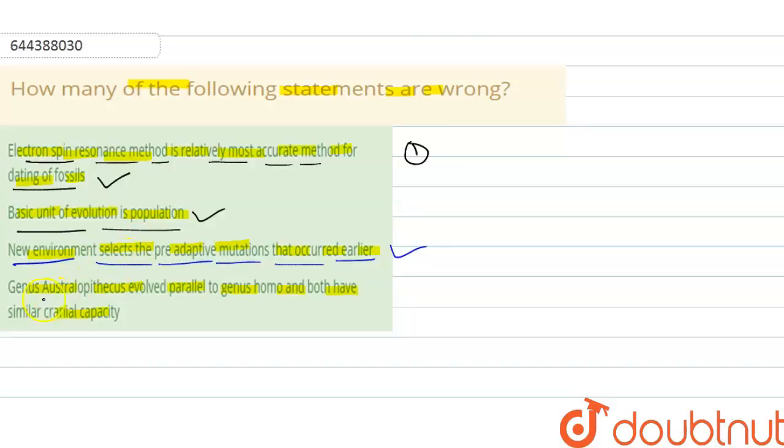Last one: genus Australopithecus evolved parallel to genus Homo and both have same cranial capacity. That is incorrect because if we talk about Australopithecus, the cranial capacity is around 400 to 600 cc. And if we talk about Homo, the first of the Homo is Homo habilis, which has around 800 cc cranial capacity. It is not similar, so that is the incorrect or wrong statement for this question. I hope you understand this solution, thank you.